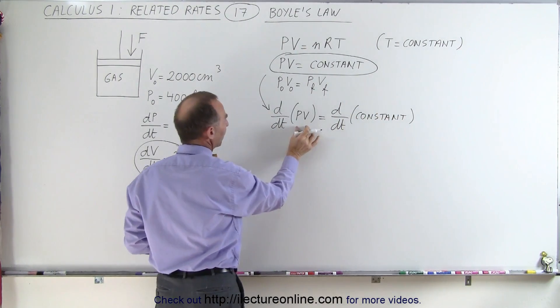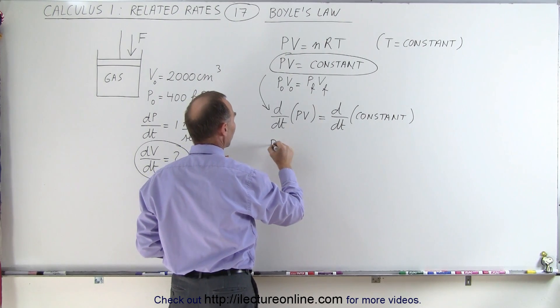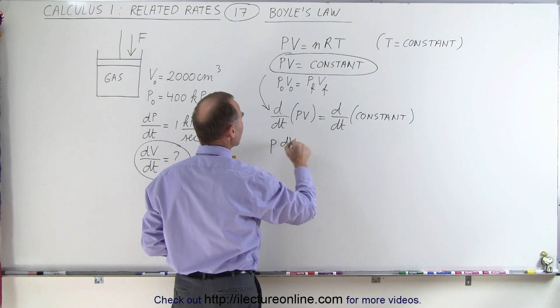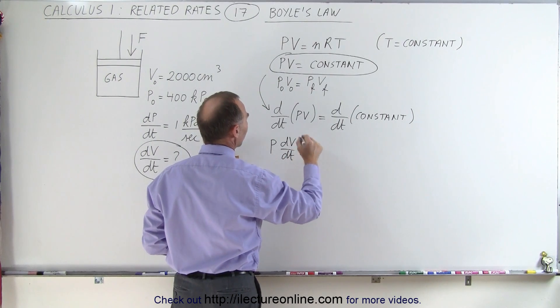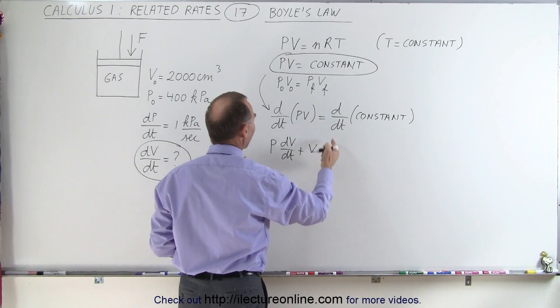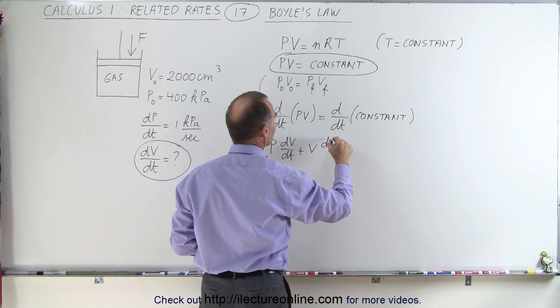On the left side, we have a product. So it will be the first times the derivative of the second, which is dV dt, plus the second, which is V, times the derivative of the first, which is dP dt.